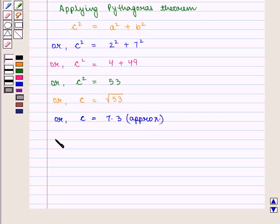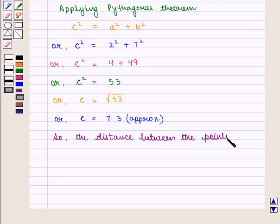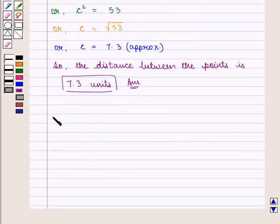So we can say that the distance between the points is 7.3 units, which is the required answer. This completes our session. Hope you enjoyed this session. Thank you very much.